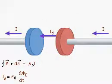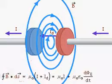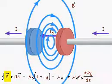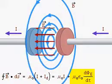The only current between the plates is the displacement current. For Ampere's law to be correct, the displacement current must create a circulating magnetic field. So there are two sources of magnetic fields: moving charges and changing electric fields.